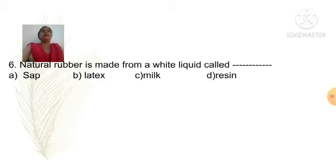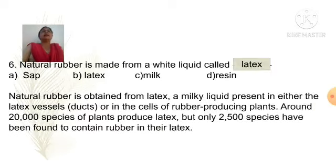Natural rubber is made from a white liquid called: Option A sap, Option B latex, Option C milk, Option D resin. Answer is Option B latex. Natural rubber is obtained from latex, a milky liquid present in either the latex vessel or in the cells of rubber-producing plants. Around 20,000 species of plants produce latex, but only 2,500 species have been found to contain rubber in the latex.